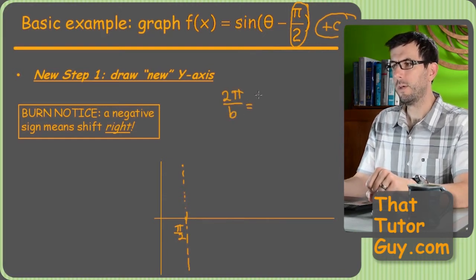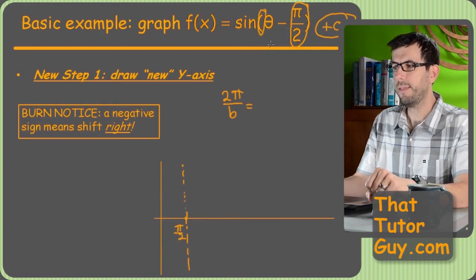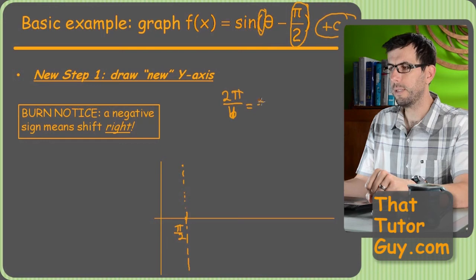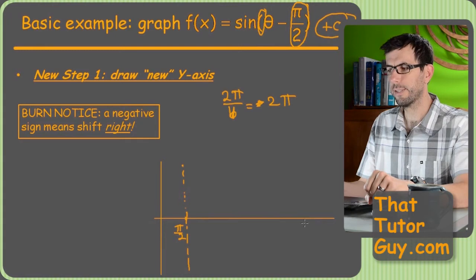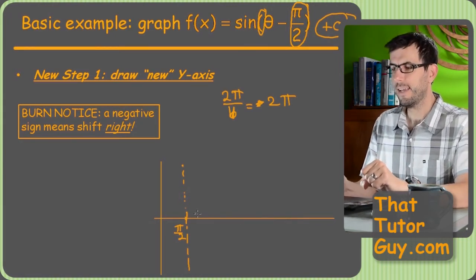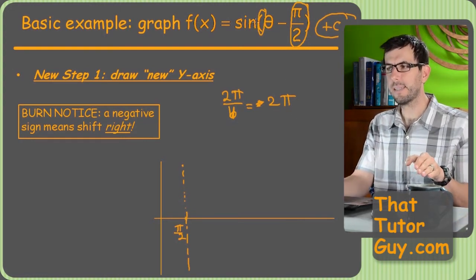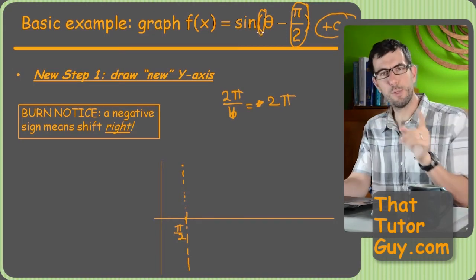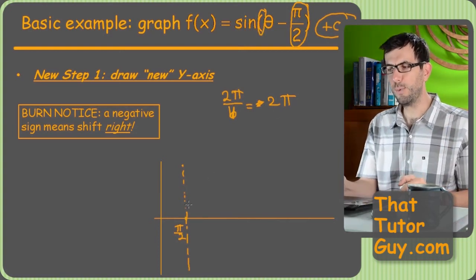So this is still the same as it used to be. We're going to do 2 pi over b. Now b in this case, the number that theta is multiplied by, nothing, right? So there's imaginary one there. So that's just going to be 2 pi. So I just go and draw 2 pi on the axis, right? No, can't do that. Not so fast. Because what the period is, is that's the time it's going to take a sine to start at zero, go up and then down and then back to zero again. That's 2 pi. It's 2 pi long. But I'm not starting at zero anymore. I'm starting at pi over 2.